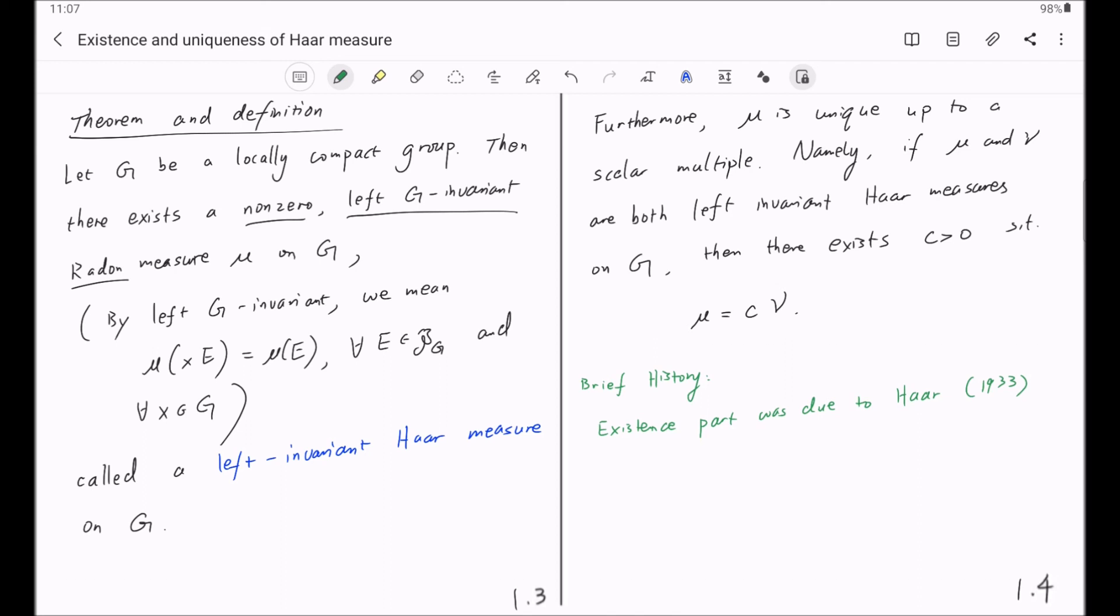And the uniqueness part was due to von Neumann, and the year is 1936. They proved the theorem under the additional hypothesis that G, this topological group G, is second countable.